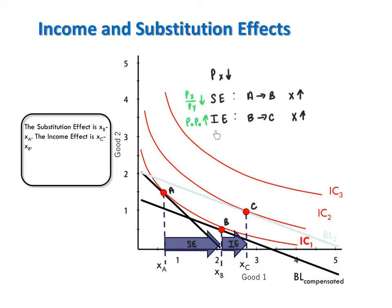The income effect shows what happens to consumption when there's a change in purchasing power, holding the relative price of x constant. We see the income effect when moving from B to C. When the price of x falls, the consumer feels richer or has an increase in purchasing power. That's what happens from bundle B to bundle C.